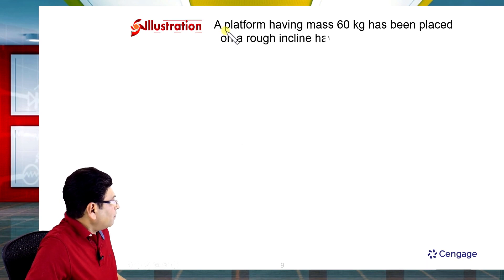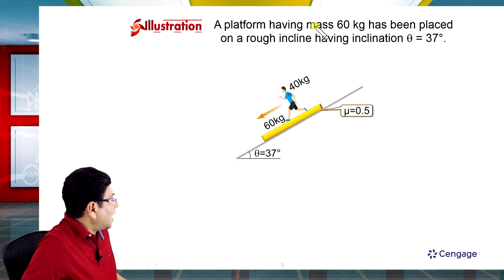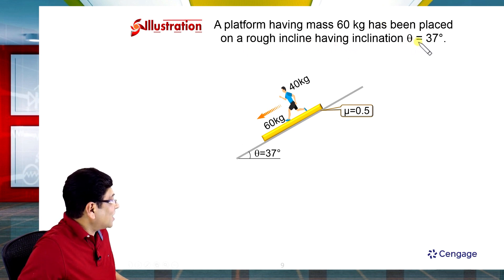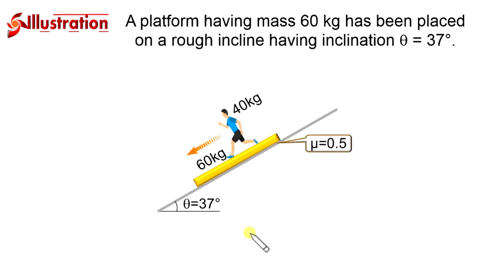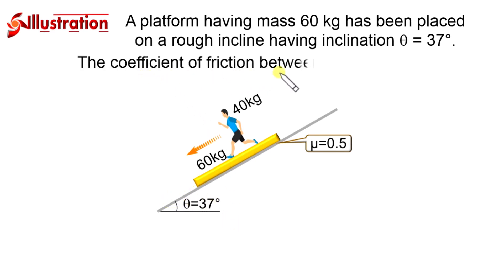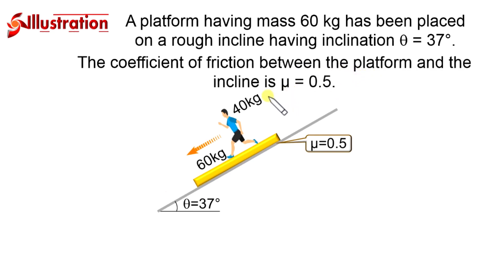In this illustration, a platform having mass 60 kg has been placed on a rough inclined surface having inclination theta equal to 37 degrees. The coefficient of friction between the platform and the inclined plane is mu equal to 0.5.